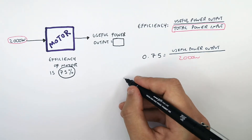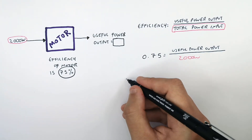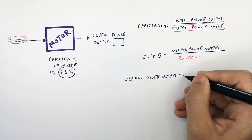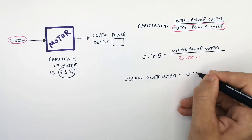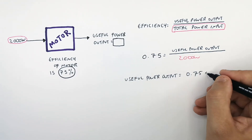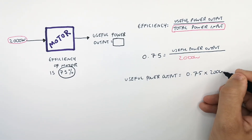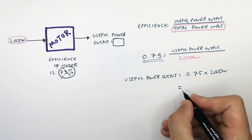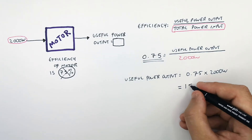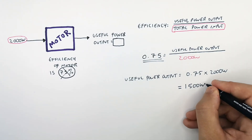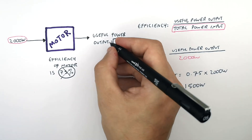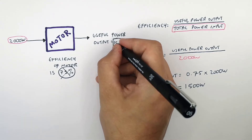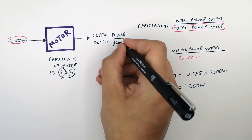So we must rearrange for the useful power output. The useful power output equals 0.75 times 2000 watts. That gives you a useful power output of 1500 watts. So the useful power output of this motor is 1500 watts.